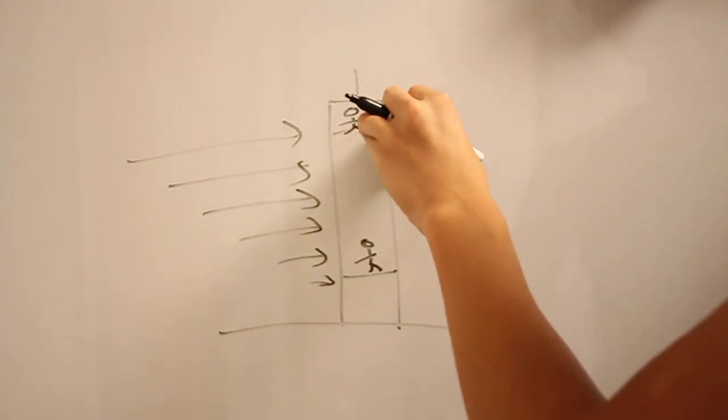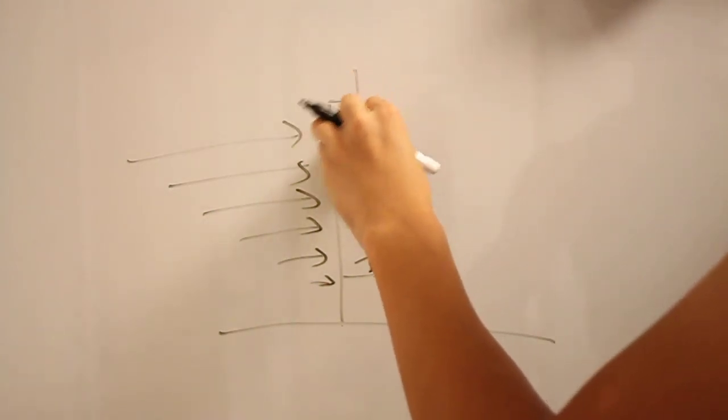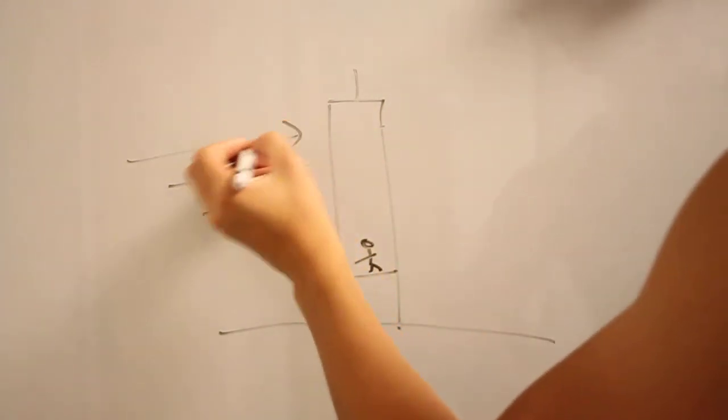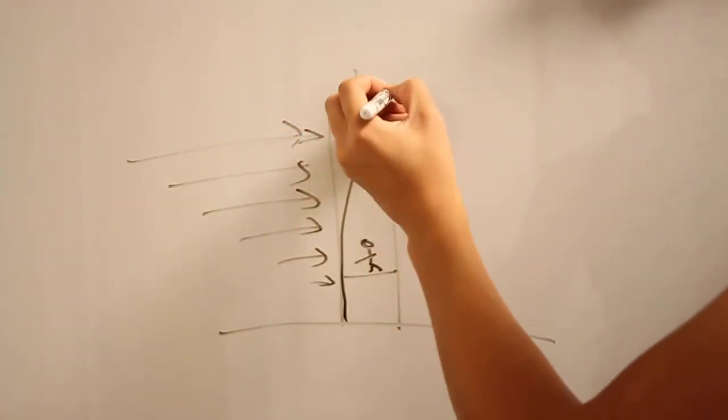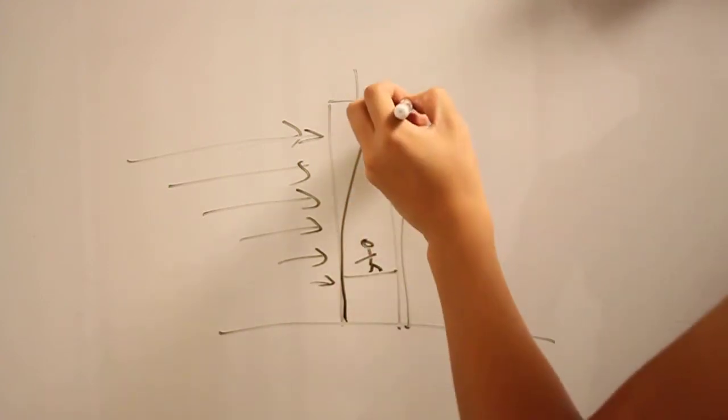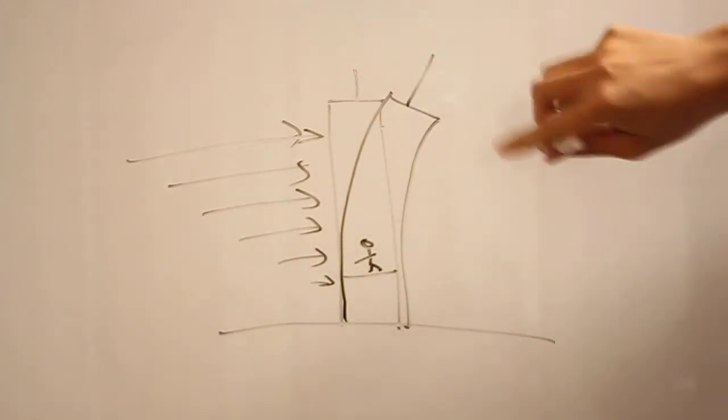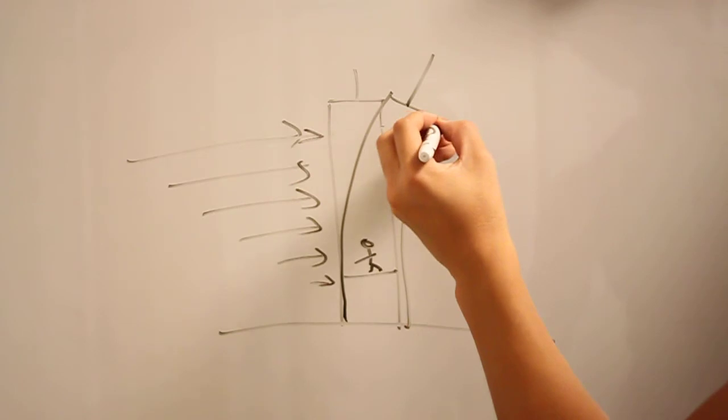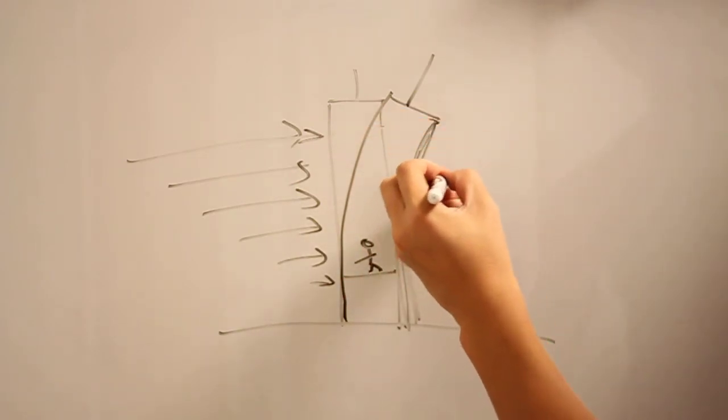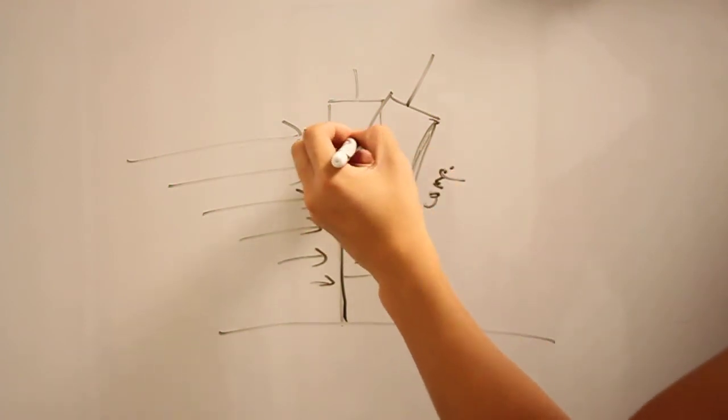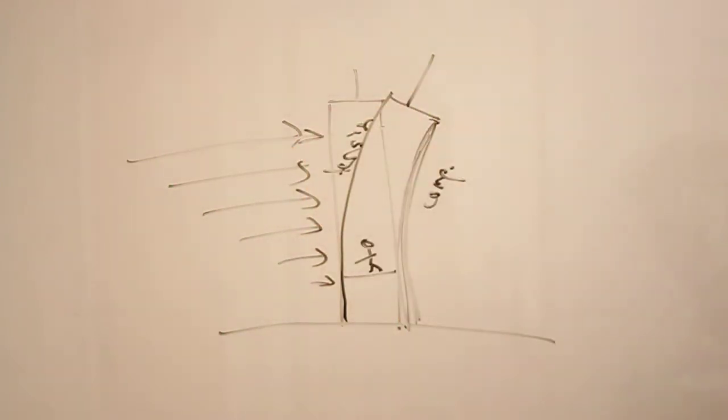So let's say one day there was a particularly intense force right at the top here and it made the building almost look like this. This is a serious problem structurally because here you have the columns on this side in compression and here you have them on tension, so you have to counteract these really strong forces on rigid beams.